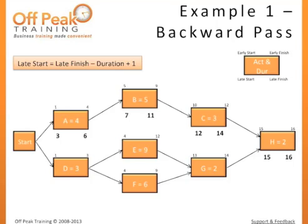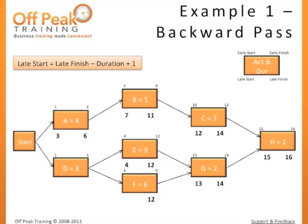Now let's calculate the bottom two paths. Since Task G is a predecessor of H, its late finish will be based on the late start of H. If H must start no later than the beginning of the 15th day, then G must finish no later than the end of the 14th day. Using our formula, late finish 14 minus duration 2 plus 1, gives a late start of 13. Both E and F are predecessors of G, so they will both have late finishes of 12. The late start of E will be 12 minus 9 plus 1, giving a late start of 4. The late start of F will be 12 minus 6 plus 1, giving a late start of 7.